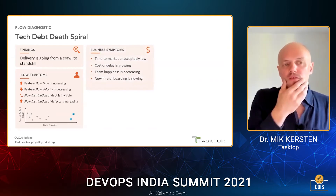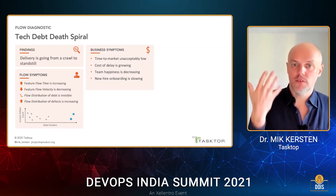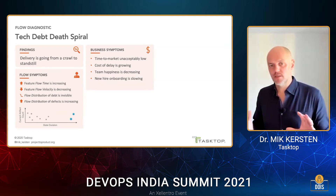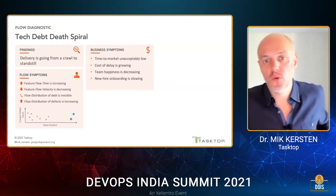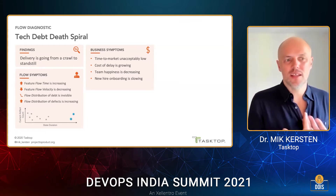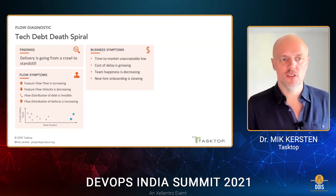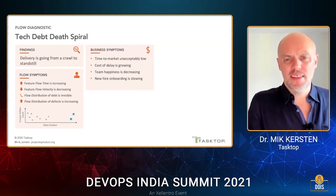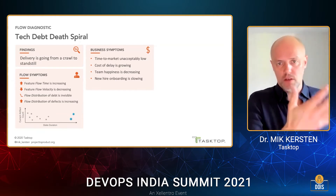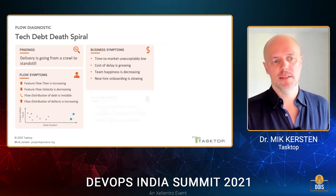The business symptoms from this are that time to market is unacceptably slow because it's taking too long to get features done. The cost of delay — not bringing those features to market — grows and grows and affects the business more and more. Internally, team happiness decreases because of all those wait states and frustration. It also becomes very difficult to onboard new staff onto architectures that are tangled and have these kinds of problematic dependencies.